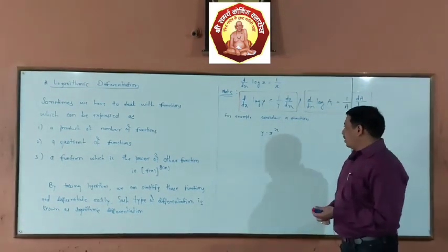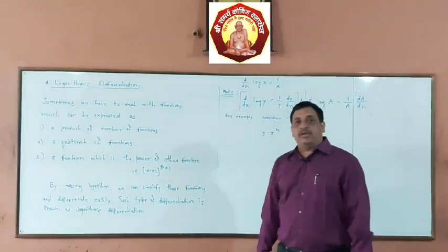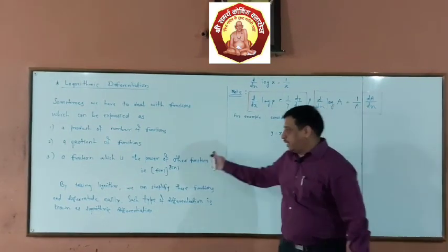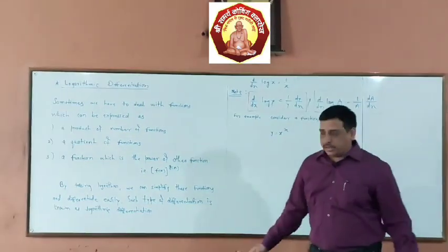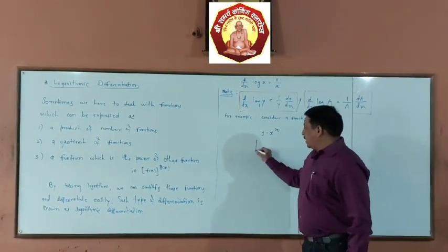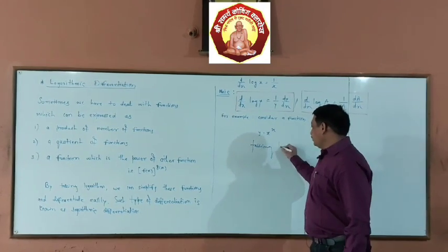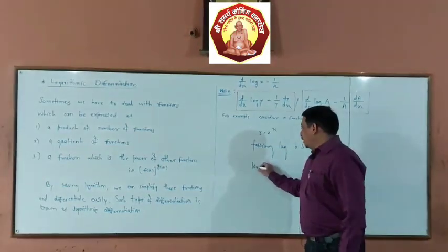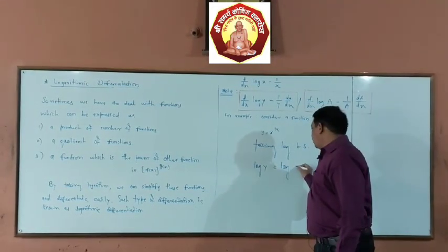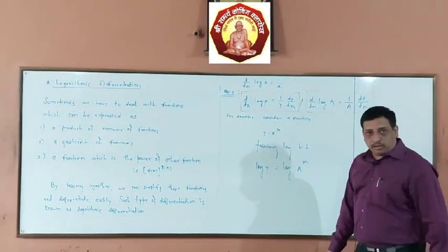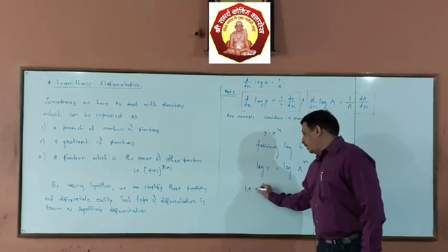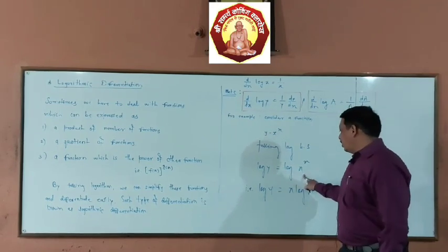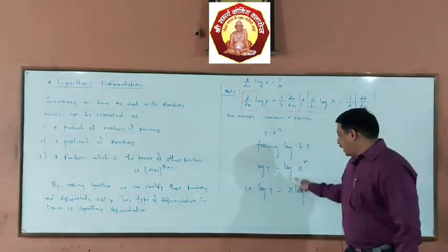For example, consider the function y = x^x. Here the base is a function of x and the index is also a function of x — that is, a function which is the power of another function. So, taking log on both sides: log y = log(x^x).